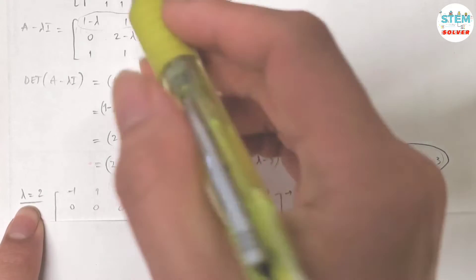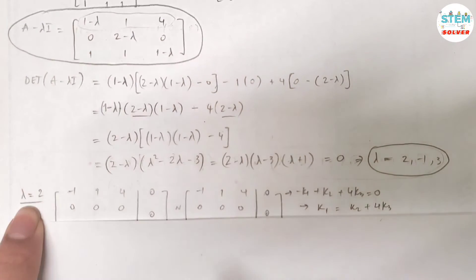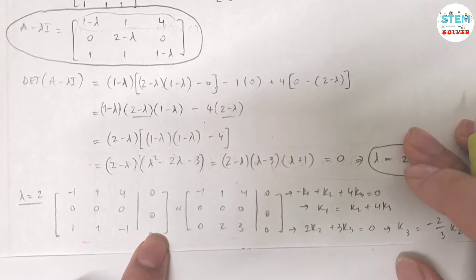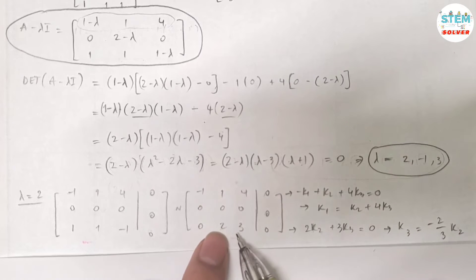Plug in λ equals 2 into this matrix. That gives you this matrix augmented with 0. You can reduce it down to this matrix. You don't have to reduce it all the way down to the reduced row echelon matrix because the goal is to solve for the unknowns. From this matrix I see that I have 2 unknowns. From the third equation I have 2k₂ + 3k₃ equals 0, then solve for either one, k₂ or k₃. I've solved for k₃ which is -2/3 k₂.